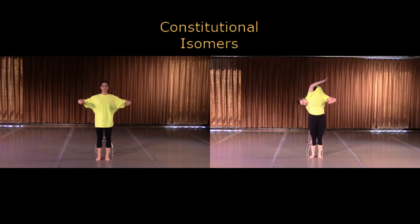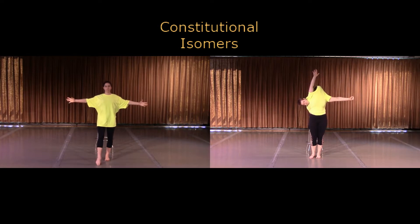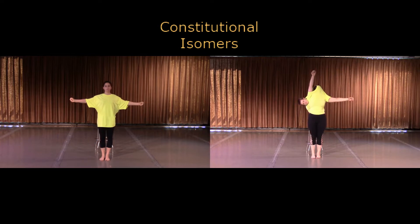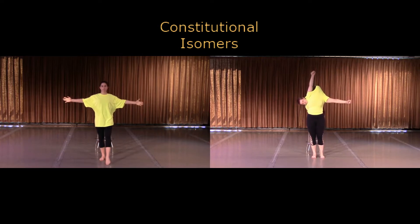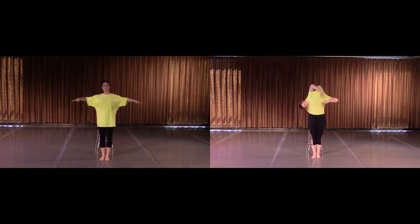Constitutional isomers are molecules that contain the same atoms but are connected differently. As you can see here, both dancers have two arms, two legs, and one head. However, one of the constitutional isomers has a head coming out of an arm socket and an arm coming out where the neck should be. They contain the same components but are connected differently.